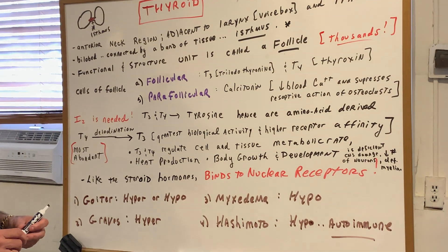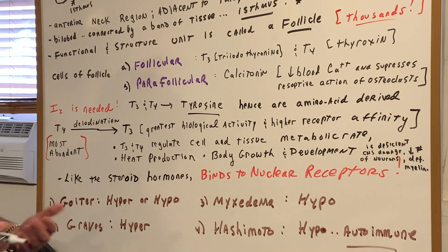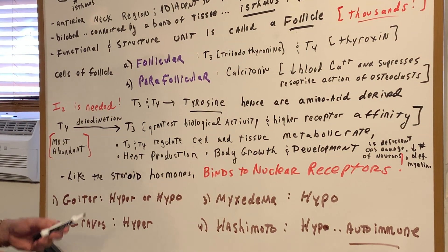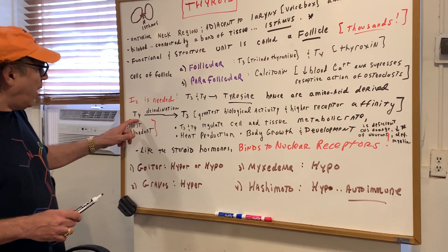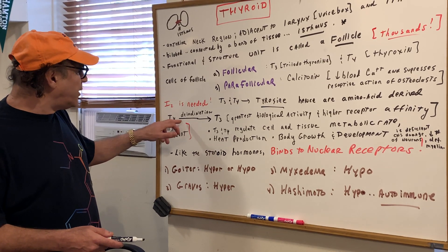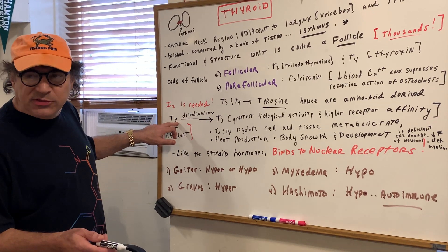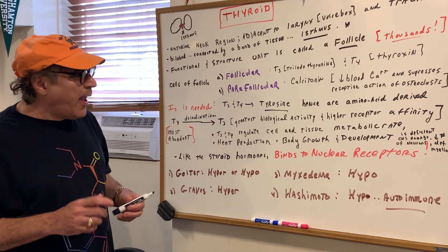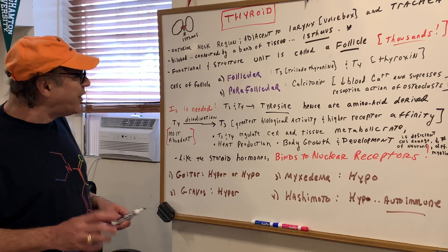T3 and T4 are amino acid derived hormones. The most abundant form is T4 — you can remember that because 4 is greater than 3. T4 undergoes de-iodination, losing an iodine to become T3. It's T3 that has the greatest biological activity and the greatest affinity for receptors.